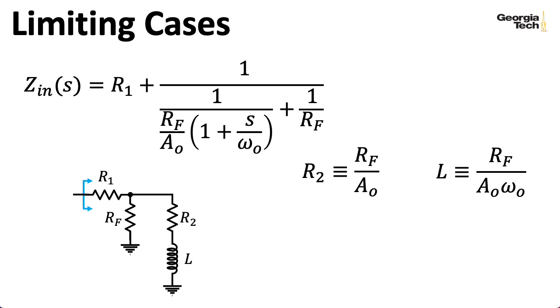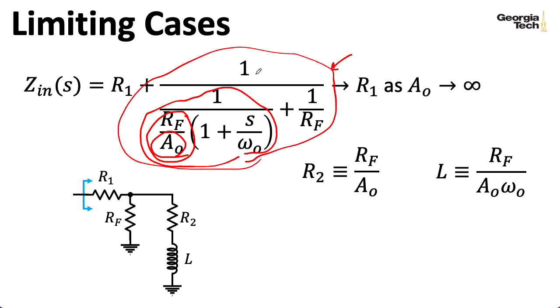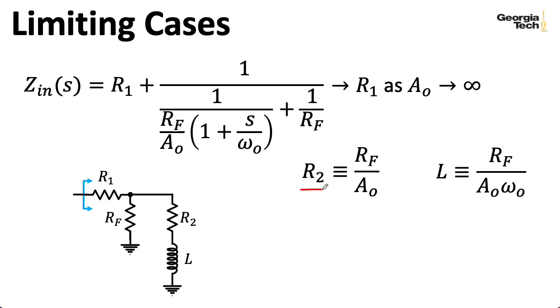Let's think about some limiting cases. First of all, notice that as A₀ goes to infinity, our inductance goes to R1. So I can see that in the equation by saying that as A₀ goes to infinity, this term here goes to zero. And as that term goes to zero, this term would go to infinity. So this term will go to zero. It's like Russian nesting doll equations, Matryoshka I think they're called. So you wind up with R1. But you can also see this by looking at the circuit. As A₀ goes to infinity, R2 goes to zero, so this shorts out. And L goes to zero, so this shorts out. So basically RF is shorted out, and you're just left with R1.